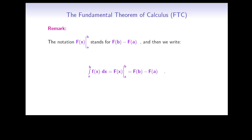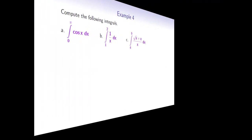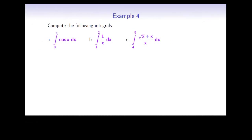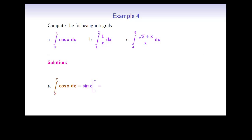Now let's move on to some examples. Compute the following three definite integrals. In part a, we need to find the integral from 0 to pi of cos x. An antiderivative of cos x is sin x, and so by the fundamental theorem we evaluate sin x at pi and 0 and compute the difference. The final answer is 0.